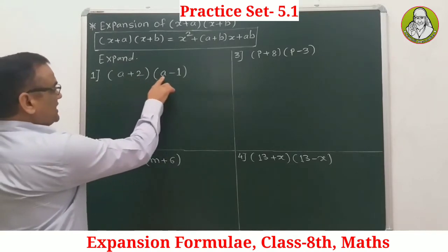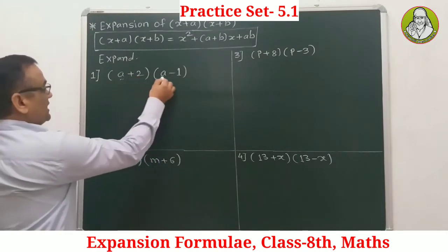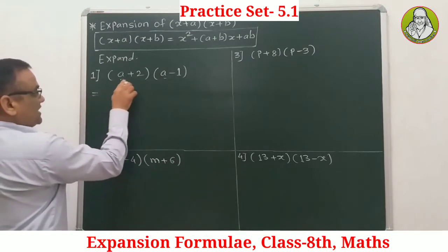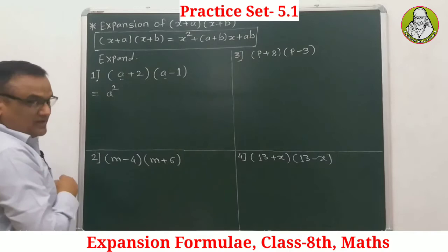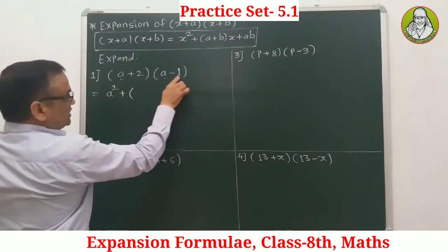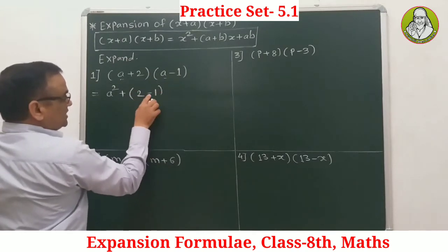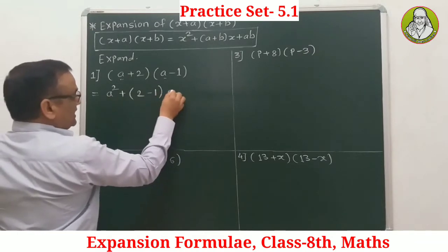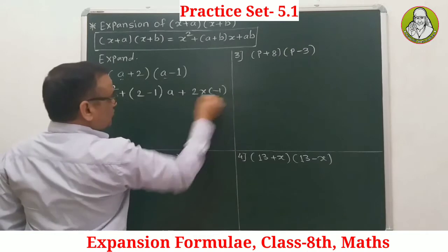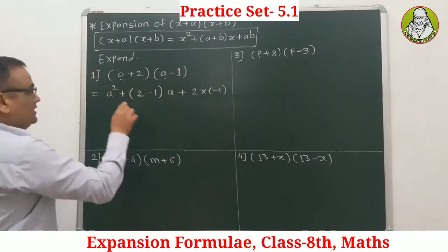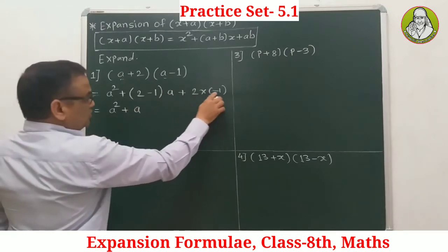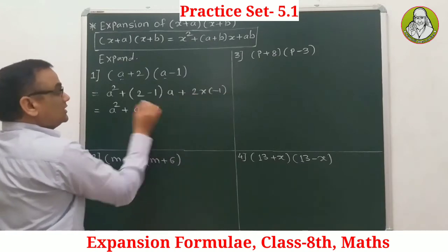Example 1: (a + 2)(a - 1). Here the equal terms are 'a', so the first term is a squared. Next, the unequal terms are +2 and -1, so (2 + (-1)) = 1, giving us +1 times a, which is a. Then 2 into (-1) = -2. Therefore the answer is a² + a - 2.